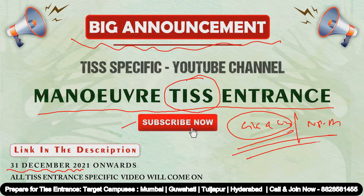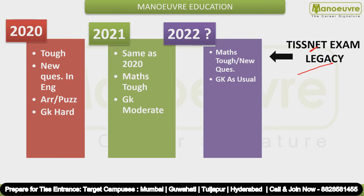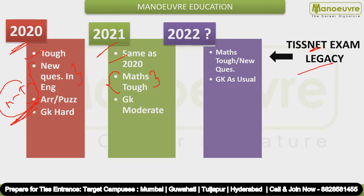Now let's look at the legacy of this TISS-NET exam. In 2020 the paper was tough — no doubt. New type questions, English arrangement questions were tricky, and GK was all-time tough. In 2021 it was the same difficulty level as 2020, but Maths questions were tough and conceptual type. You have to work rigorously on the Maths area — concept-based questions — and GK remains all-time tough.